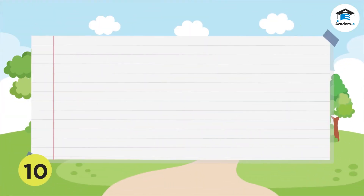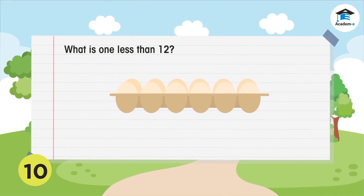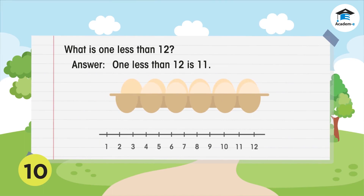One more example. What is one less than 12? One less than 12 is 11. On the number line, one step back from 12 is 11.